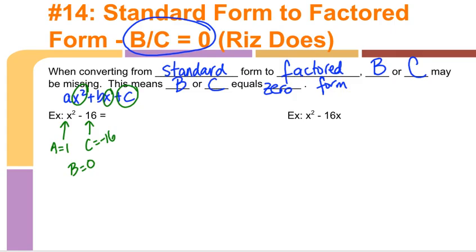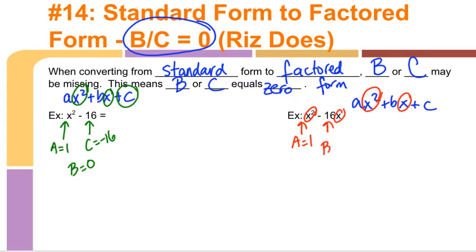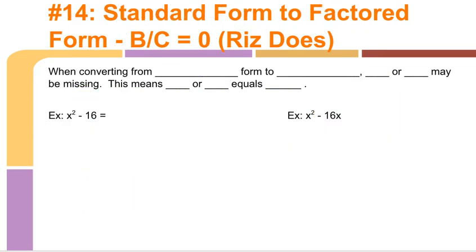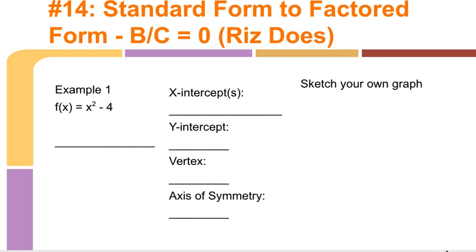This next example looks similar. Again, if it has x² that's A, so A equals 1. The term with an x is B, so B equals negative 16. There's no last number without a variable, so C equals 0. We're going to use the same diamond method as before, just accounting for the fact that B or C might be 0.